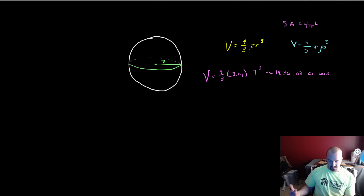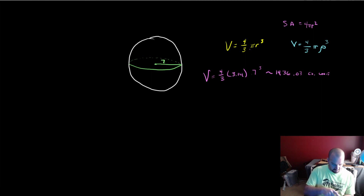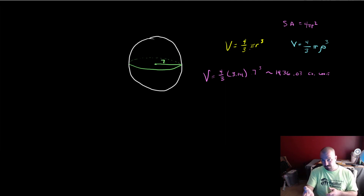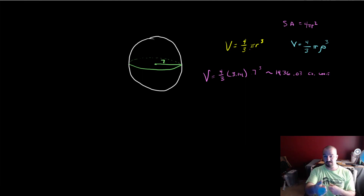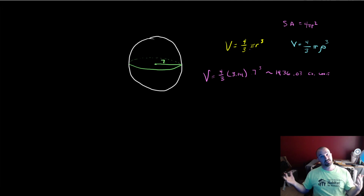The nice part about the sphere is that because you only have essentially one measurement cubed, whatever unit the 7 is in is the unit being cubed at the end. You can also combine figures — take a cone, flip it upside down, put half a sphere on top, and you have an ice cream cone. Just take the volume of the cone and add half the volume of the corresponding sphere, and you're done. That's the basics of geometry for volume.